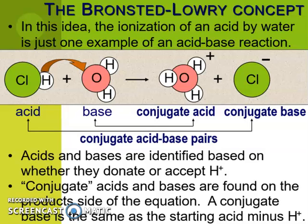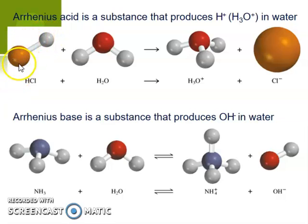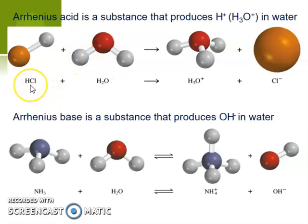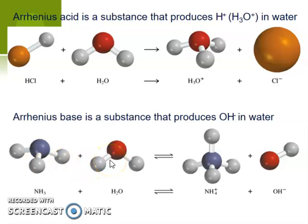Let's look at the same HCl plus water reaction using ball-and-stick models. Here's hydrochloric acid, here's water, and the products are the hydronium ion H₃O⁺ and the chloride ion Cl⁻. You can identify what water is by what it's reacting with — in this case there's an acid, so water behaves as a base. The Arrhenius definition says a base is a substance that produces hydroxide ions in water, but that's not always sufficient.